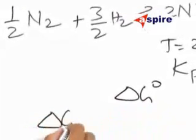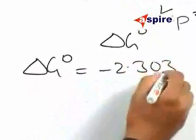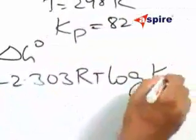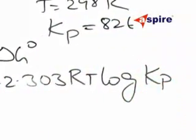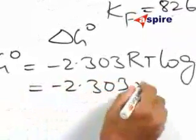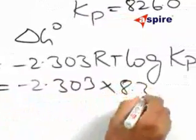Now, the formula is delta G0 is equal to minus 2.303 RT log Kp. Let us substitute the values, 2.303. The R value to be used here is 8.314.